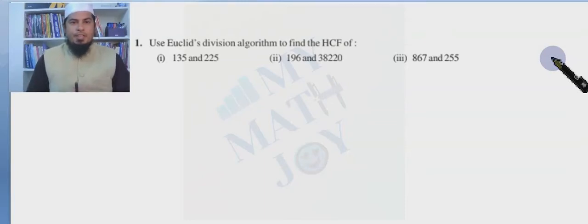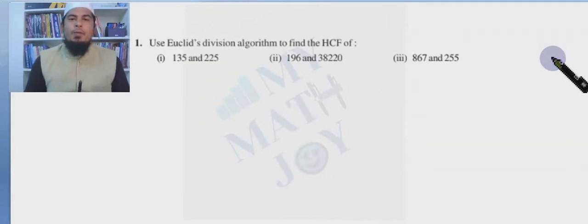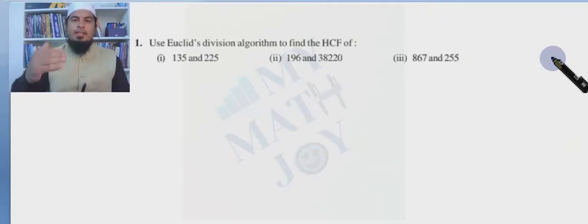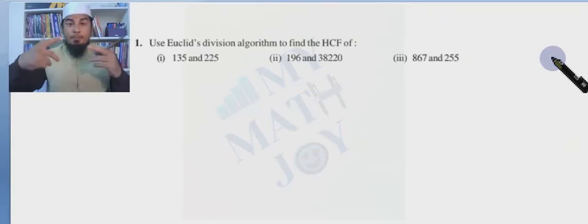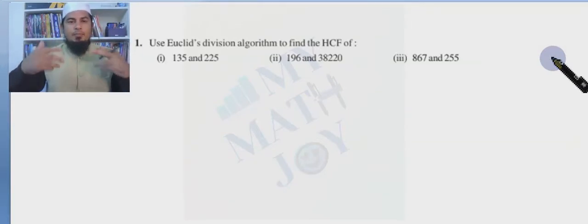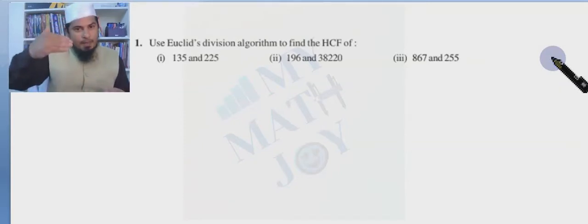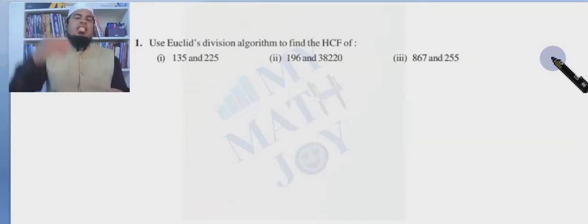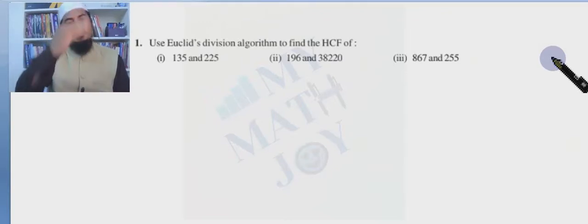We use Euclid's division algorithm to find the HCF. We have already understood what a lemma and algorithm are. In order to find HCF, if in the first step we don't get an answer, we go for the second step, then the third step. It is a step-by-step process connected with each step — that is why it is called an algorithm.